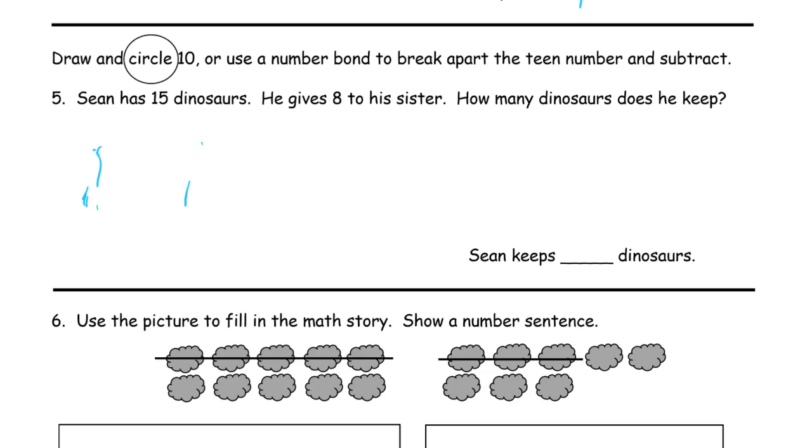Sean has 15 dinosaurs. He gives 8 to his sister. So 15 is going to be 10 and 5. We're subtracting. 8 he gives away. And he gets to keep the rest.